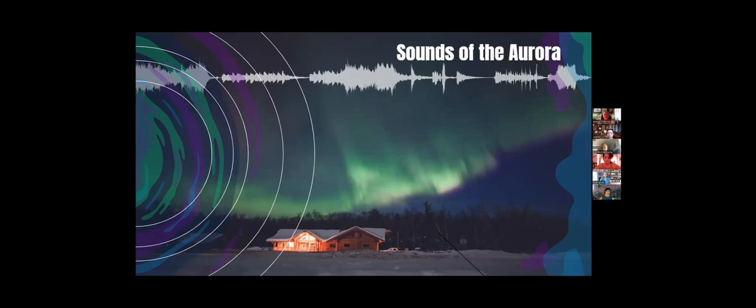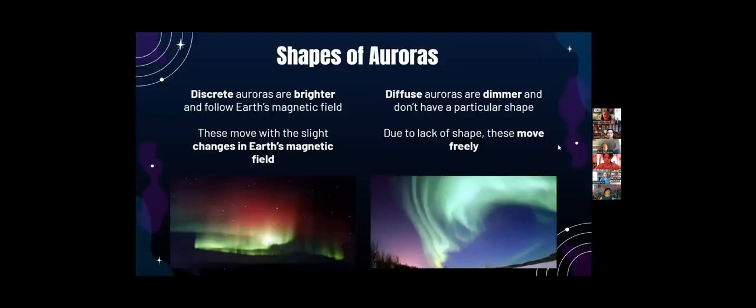Additionally, Earth's magnetic field also causes the shape of the auroras, and that includes rays, arcs, curtains, and coronas, disks. Now, these shapes can be put in two categories, discrete, which are brighter and follow Earth's magnetic fields, and they kind of move with slight changes in the magnetic field. They also occur in diffuse auroras, which are dimmer, and they don't actually have a particular shape. Due to the lack of shape, they move very freely. They're hard to see because the charged particles are more scattered than that of discrete auroras.